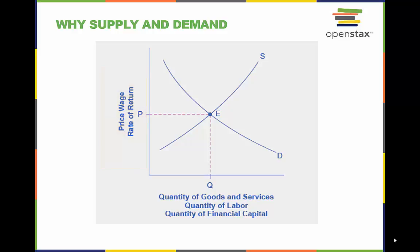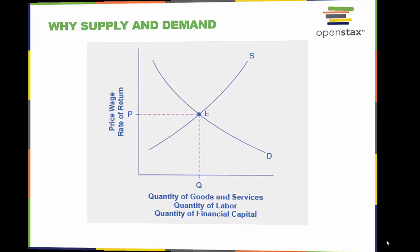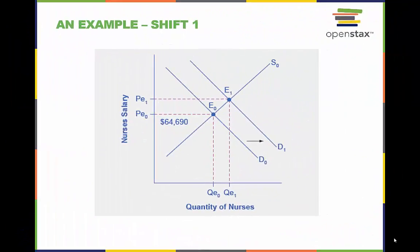The demand and supply curves can be used to explain how economic events will cause changes in prices, wages, and rates of return. Here is an example of how these models help us understand markets.